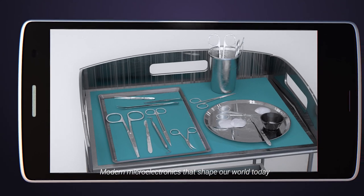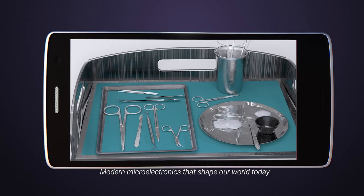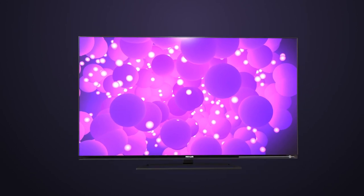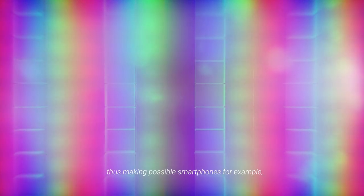Modern microelectronics that shape our world today can only be produced using elaborate plasma processes, thus making possible smartphones, for example, or plasma TVs.